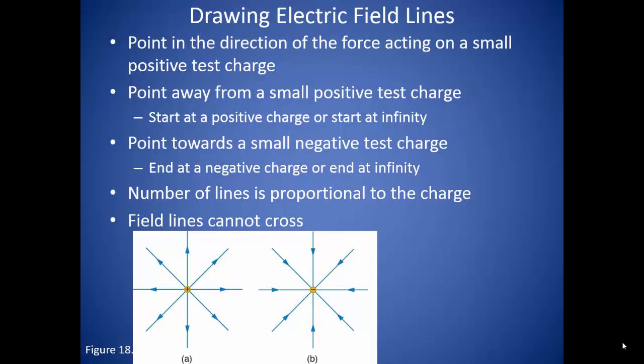So in order to draw electric field lines, there are a few rules to keep in mind. The first couple rules have to do with the direction of the vectors of the field line. First and foremost, the electric field lines point in the direction of the force that is acting from the electric field on a small positive test charge.